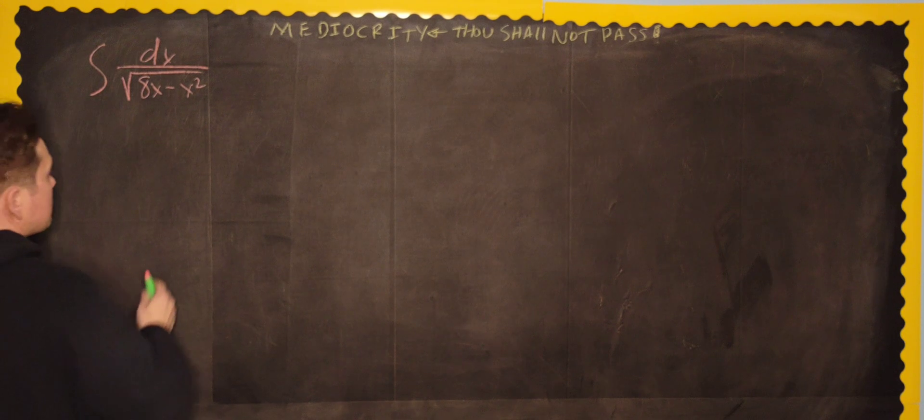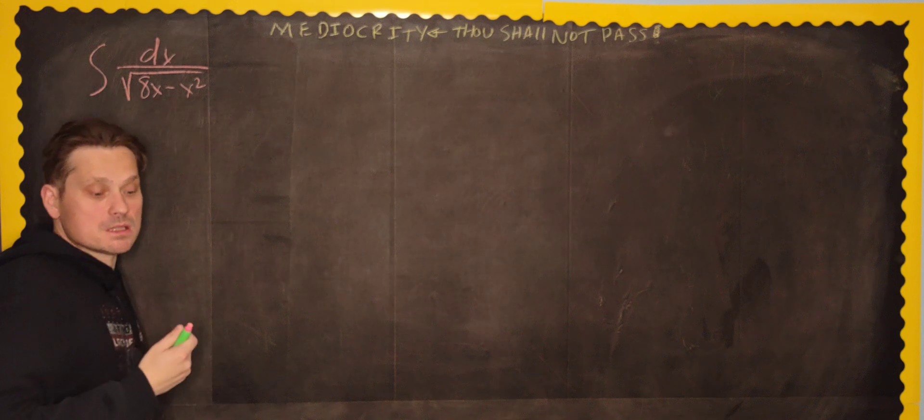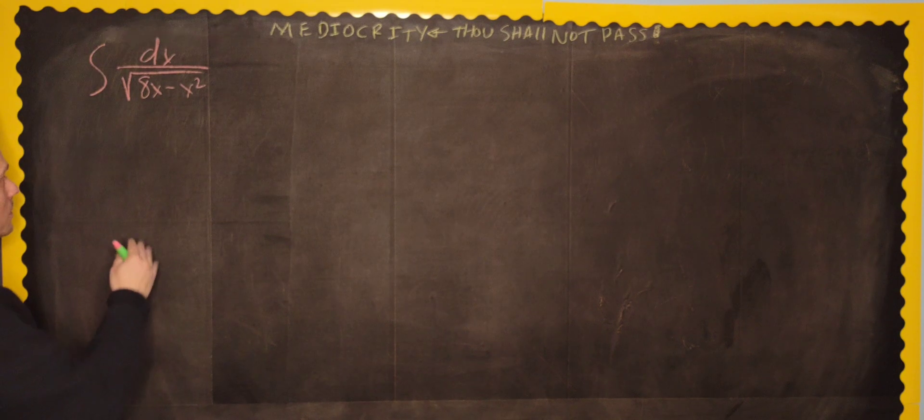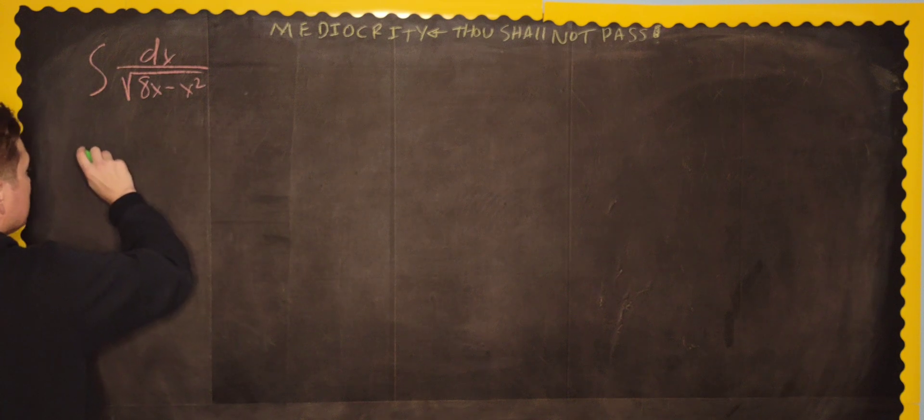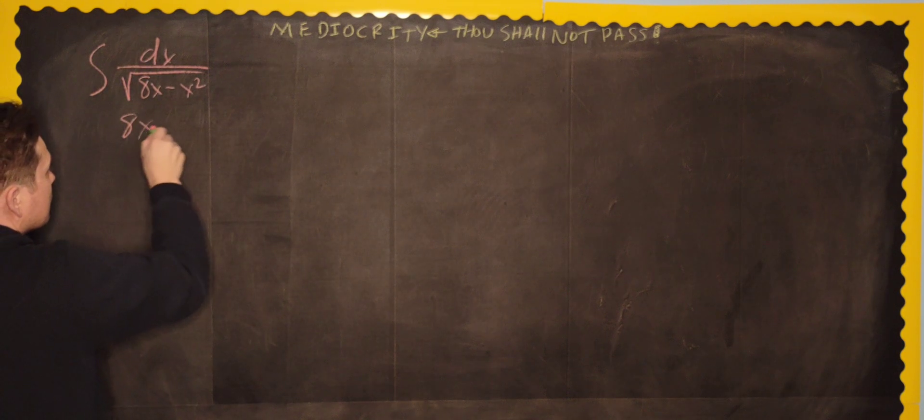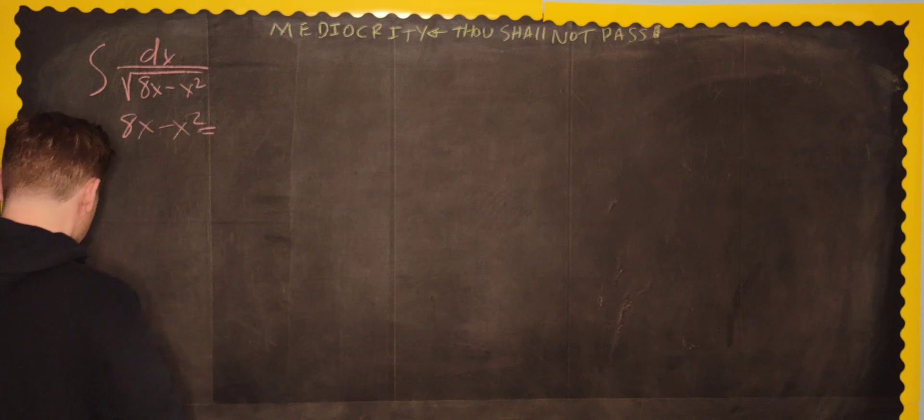So the first stage in the process is we're going to make this into a form that we can integrate pretty easily. That means we have to transform the expression under the root symbol. So let's do the following then. Take 8x minus x squared, and we're going to complete the square in this part.